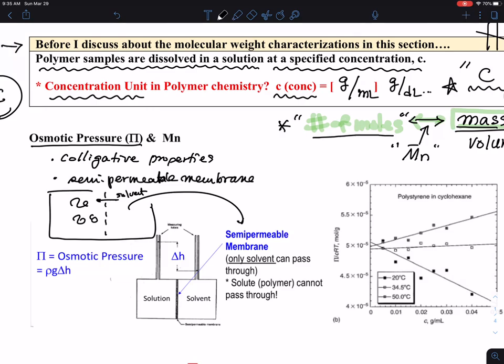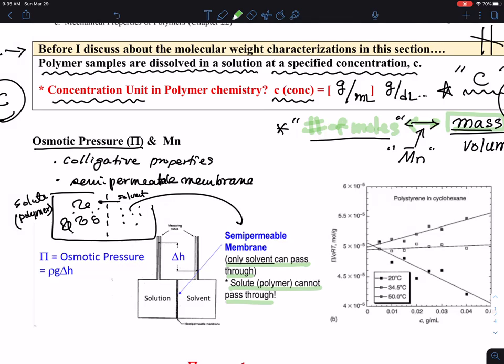Therefore, solvent is free to move around. These are the solvent, if I want to call it as a dot. They are free to move around, not the solute. Solute is the polymer chain, which is big enough they cannot pass through the semi-permeable membrane. So therefore, only the solvent can pass through and solute, which is a big polymer, cannot pass through. That is really the scenario for the osmotic pressure experiment.